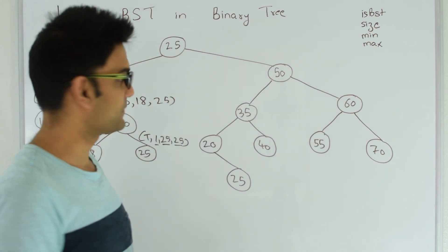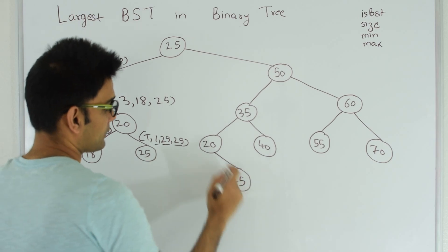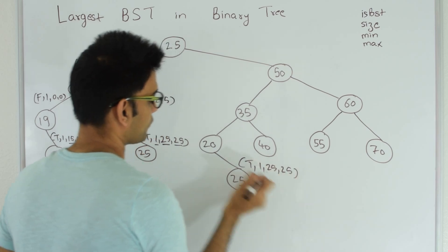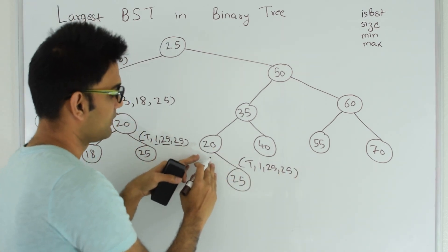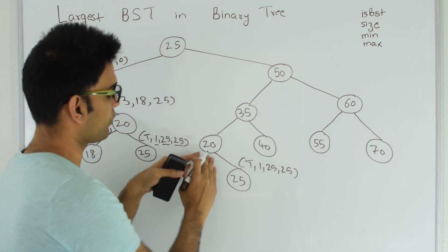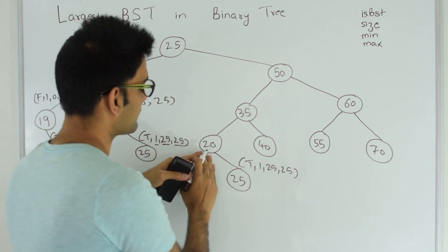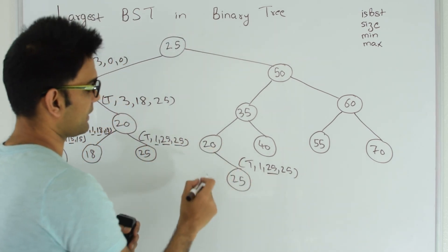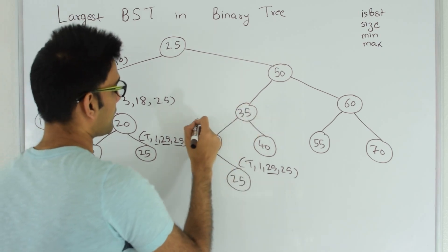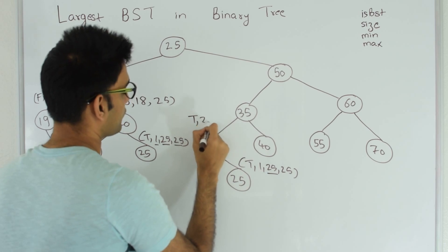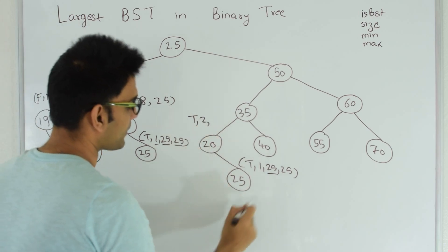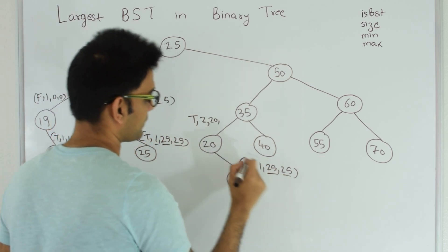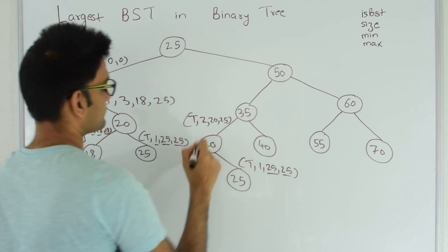Now traversing the right side: 25 goes to 50, 50 goes to 35, 35 goes to 20, and 20 goes to 25. Node 25 returns true, 1, 25, 25 to 20. Node 20 checks: is the minimum on the right side, which is 25, greater than 20? It is. So including 20, this is still a BST. Node 20 returns to 35: true, size 2, minimum 20, maximum 25. Then node 40 returns to 35: true, 1, 40, 40.